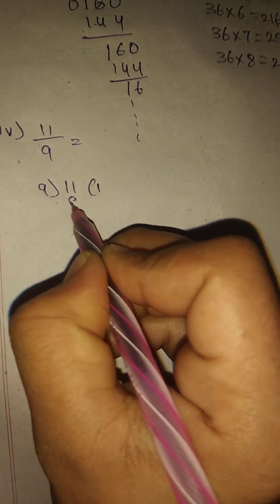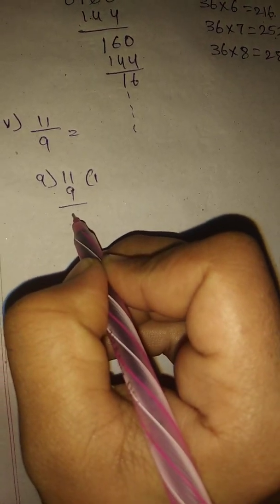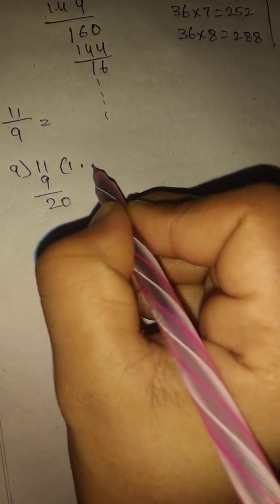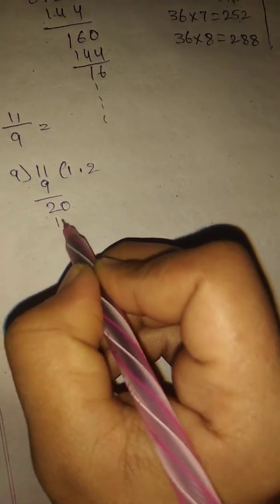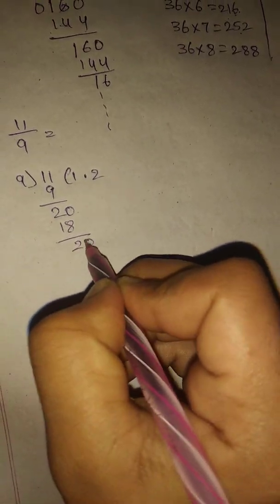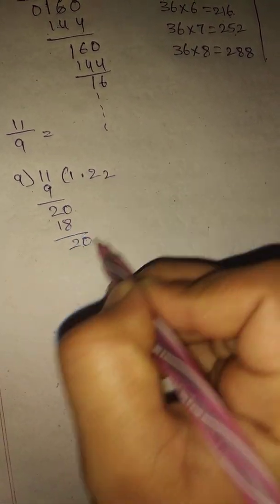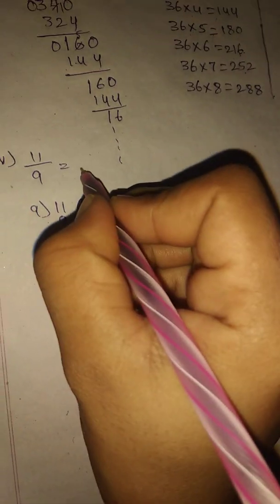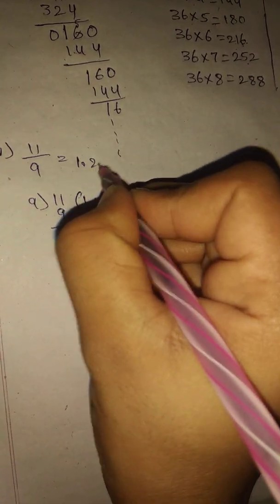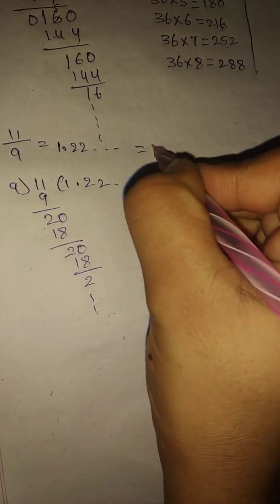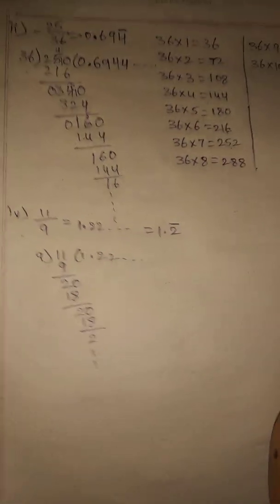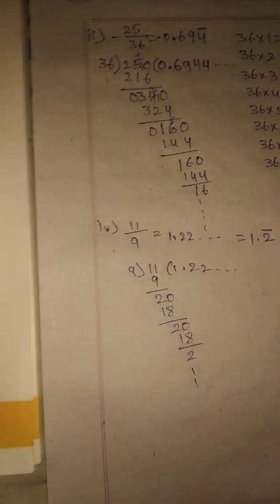Fourth problem: 11 by 9. Take decimal point, bring 0; nine twos are 18; remainder 2, bring 0 again; nine twos are 18, remainder 2 — this continues. The answer is 1.222... which we write as 1.2 bar, meaning 2 repeats continuously.